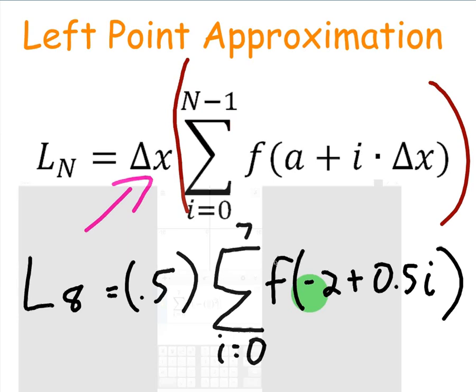Well, if we go and look at our function here, it's f of negative 2 plus 0.5i. So wherever there's an x, I'm going to replace it with my negative 2, which is my a value, plus 0.5i, where 0.5 again is your change in x. And that will take care of the rest. The only thing we'll have to do is put the width of the rectangle up front.